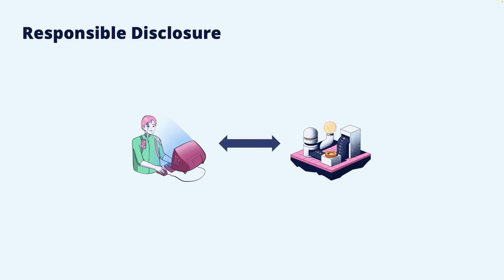The vendor should then be given enough time to patch the vulnerability. What counts as enough time can be somewhat arbitrary, depending on the severity of the vulnerability and the effort needed to remediate it. Around 30 to 90 days is commonly seen, with the possibility to extend if the vendor is responsive and actively working to fix the vulnerability.